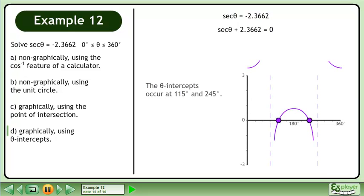The theta intercepts occur at 115 degrees and 245 degrees. This is the same result we found in parts A and C.